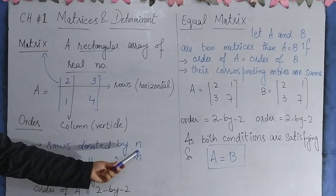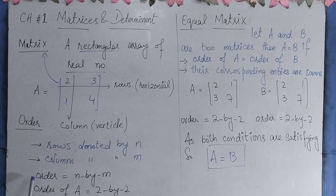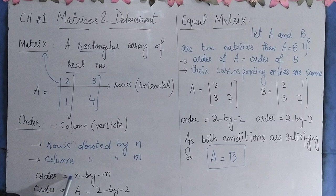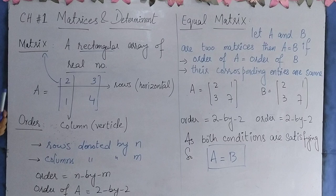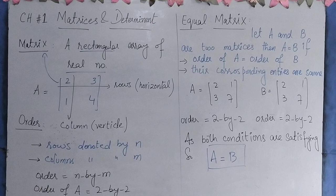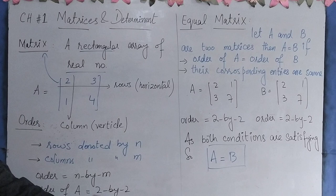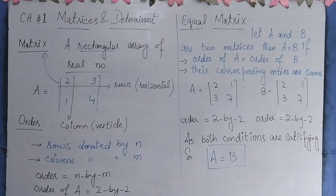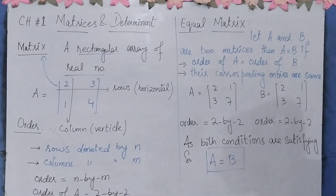The order is n by m. So for example, looking at matrix A, the number of rows is 2 and the number of columns is 2, so the order of A is 2 by 2. If you multiply them, you get 4 elements.